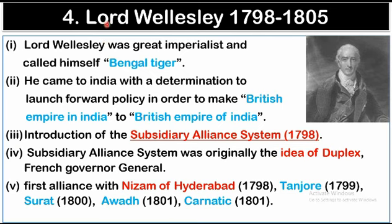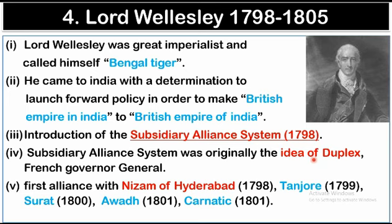The fourth Governor-General was Lord Wellesley, whose tenure was from 1798 to 1805. Lord Wellesley was a great imperialist who called himself the Bengal Tiger. He came to India with the aim of converting British India into a British Empire. He is very famous for the introduction of the Subsidiary Alliance system in 1798. This idea was not originally new; it was first introduced by the French Governor-General Dupleix. The first states to enter the Subsidiary Alliance system were Nizam of Hyderabad in 1798, Tanjore in 1799, Surat in 1800, Awadh in 1801, and Carnatic in 1801.